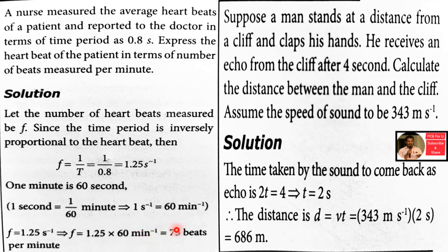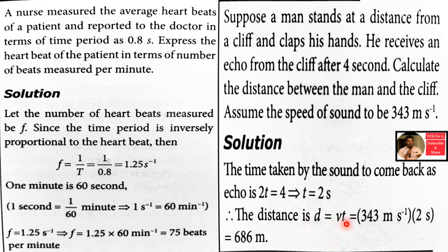A man stands at a distance from a cliff and claps his hands. He receives an echo from the cliff after 4 seconds. The time for sound to travel to the cliff and back is 2t equals 4 seconds, so t equals 2 seconds. Distance equals speed into time equals 343 m/s into 2 seconds, which equals 686 metres.